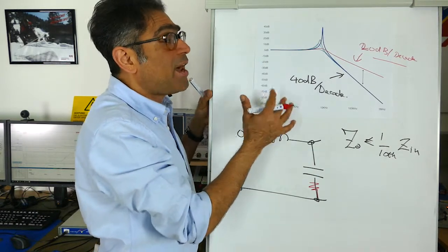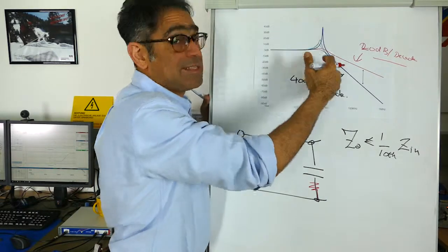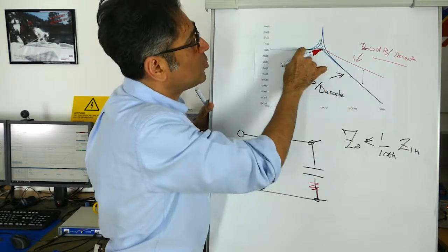Now wouldn't it be nice if I could keep the cutoff frequency the same and the attenuation the same at a rate of 40 dB per decade but also damp this Q.